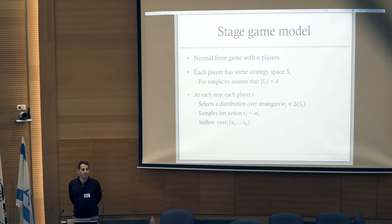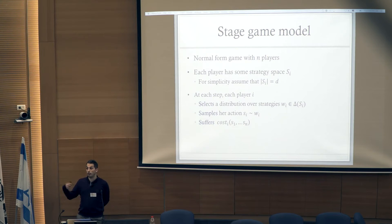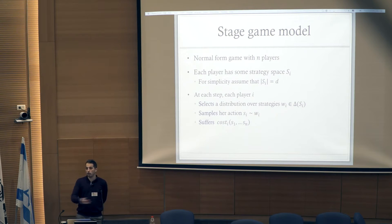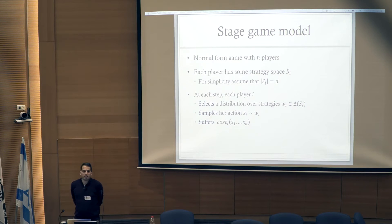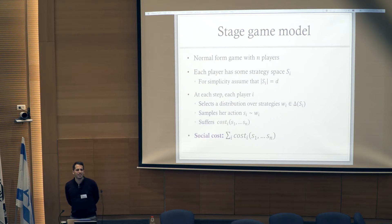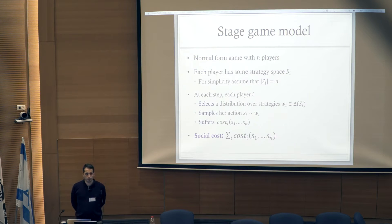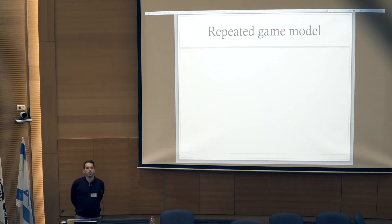At each step, the player first selects a distribution over his possible strategies, then samples an action from the distribution, and finally incurs a cost that is a function of the realized actions of all players. In the routing game case, he decides a distribution over paths, samples a particular path, and then experiences some delay based on how many people used each edge.